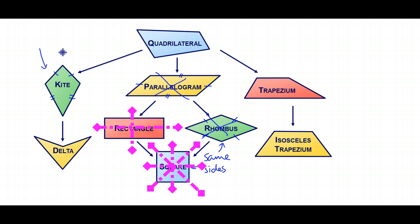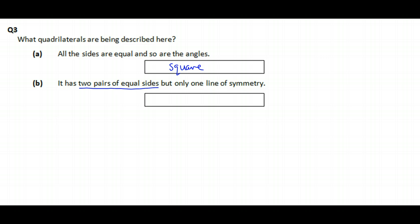So the only one that's got one line of symmetry, the same on the left and the right in this case, is a kite. So that's what we've got to put in here.